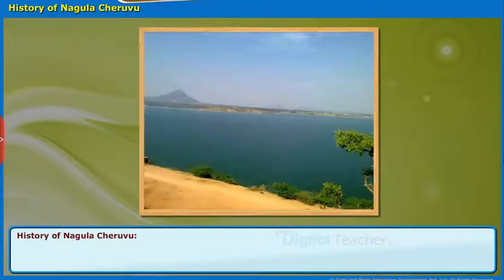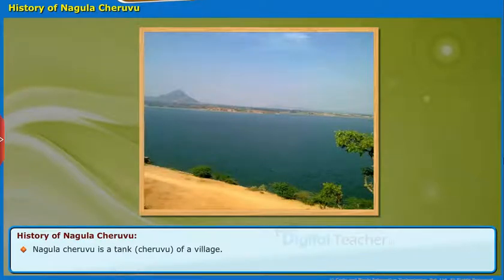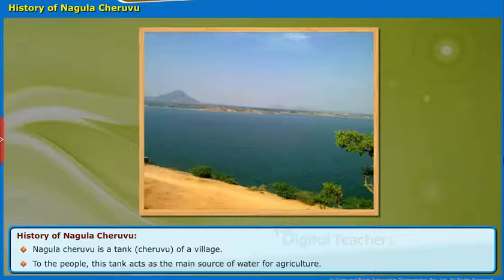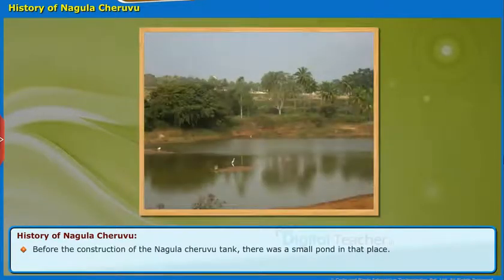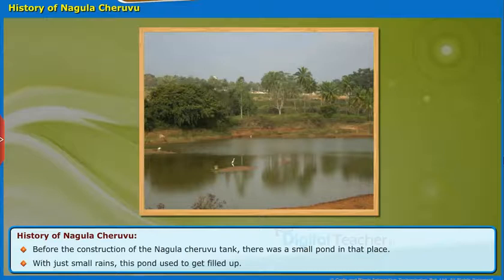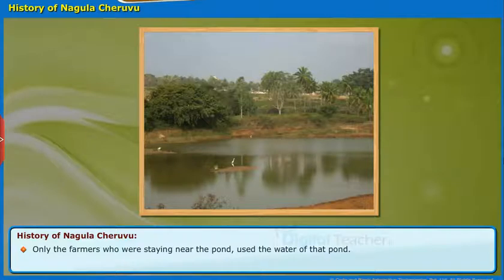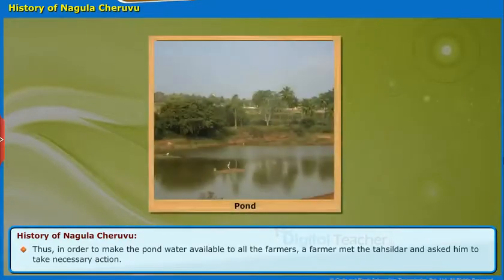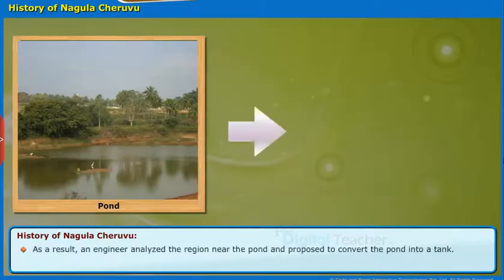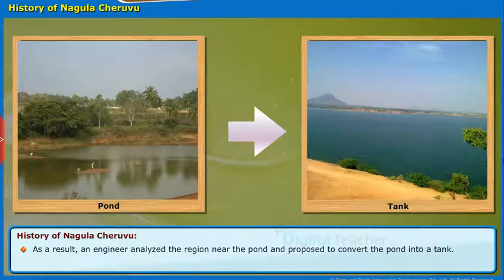We will first start with the history of Nagula Chiruvu. Nagula Chiruvu is a tank or Chiruvu of a village, and it acts as the main source of water for agriculture. Before its construction, there was a small pond in that place which used to get filled up with just small rains. Only the farmers staying near the pond used its water. To make the water available to all farmers, a farmer met the Tahsildar and asked him to take necessary action. As a result, an engineer analyzed the region and proposed to convert the pond into a tank.